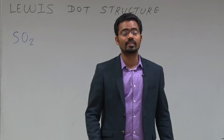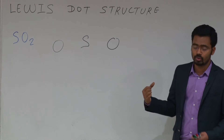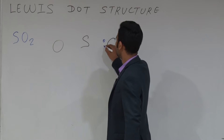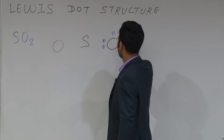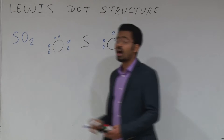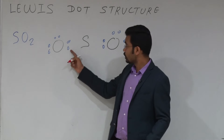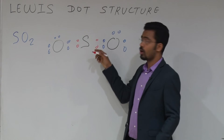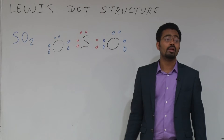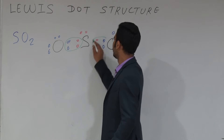If expansion is not possible, then we draw the coordinate structure of SO2. How do you draw that structure? Oxygen has 6 valence electrons, and sulphur also has 6 valence electrons. So 2 electrons will be shared with oxygen and 2 electrons will remain as a lone pair. This is the bond between sulphur and oxygen.